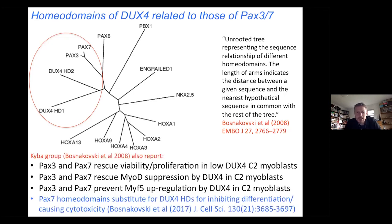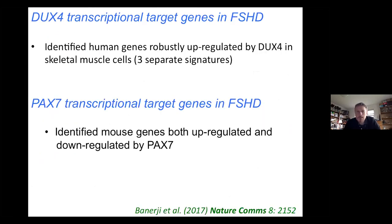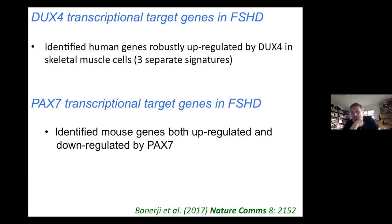Michael Kuyper years ago had a paper showing that PAX3 and PAX7 can rescue DUX4 pathology in mouse, and that you can substitute the homeodomains of PAX7 for those of DUX4 and still maintain some function of DUX4. We were interested in asking: can we use DUX4 target genes to identify FSHD muscle? You'd expect that if it's a transcription factor causing pathology, it will be activating its target genes. So we made three separate signatures of 100-plus genes each, and then a signature of PAX7 target genes — using a ratio of up- and down-regulated genes to assess whether PAX7 is active in a particular muscle.